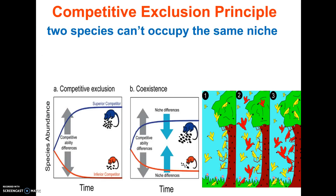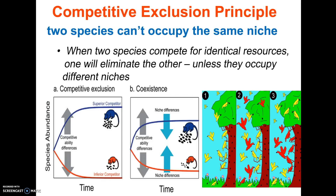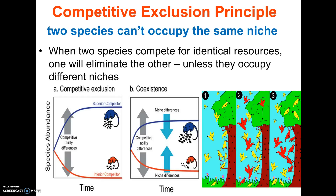There's a rule called the competitive exclusion principle. It says that two species cannot occupy the same niche. A niche is an organism's way of life — for example, what it eats, where it lives, when it hunts, all that kind of stuff. If you have two species that have the exact same niche, one will outcompete the other and the other one will basically be extinct in that area.